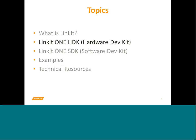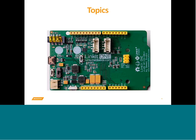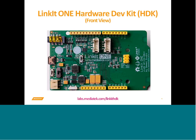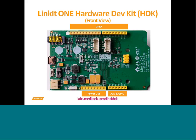Now we'll cover what is the LinkIt One HDK — the hardware specifications and designs. This is the front view of the hardware board, made by Seeed Studio. From the diagram you can see it's an Arduino-compatible layout, and you can plug an Arduino Uno on top of this board. This board consists of a number of inputs and outputs. On the top there are 16 GPIOs — general purpose I/O. On the bottom, we have power out as well as AD converters and some GPIOs.